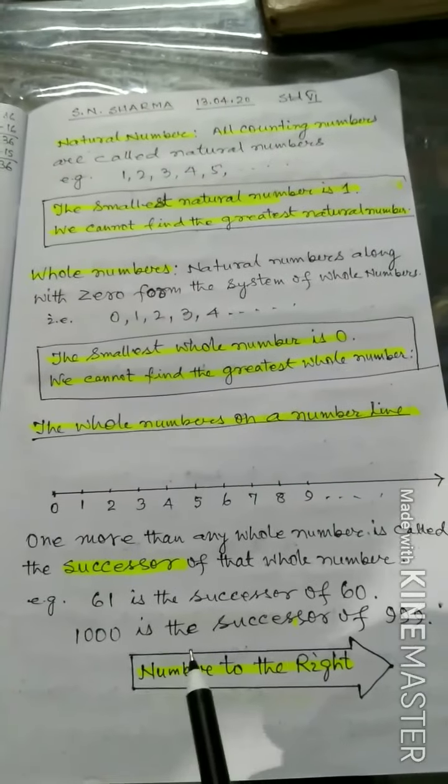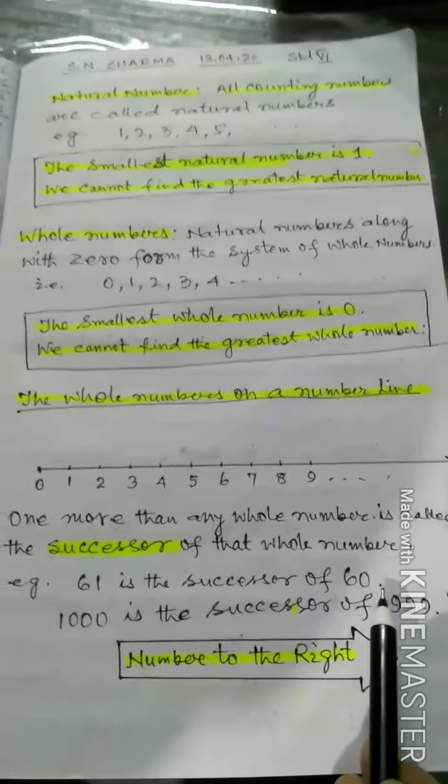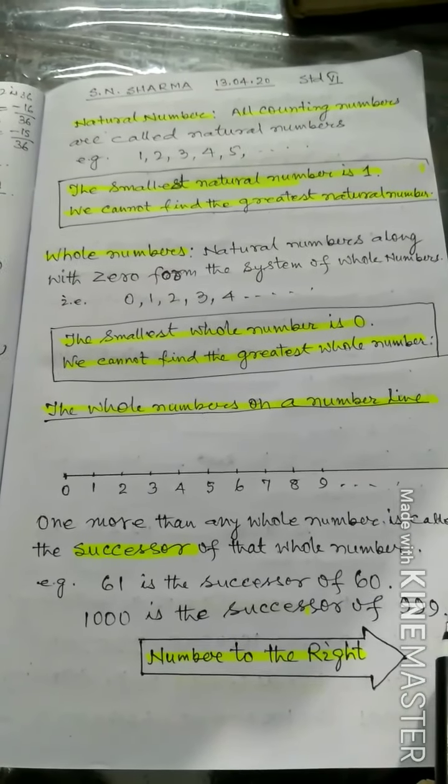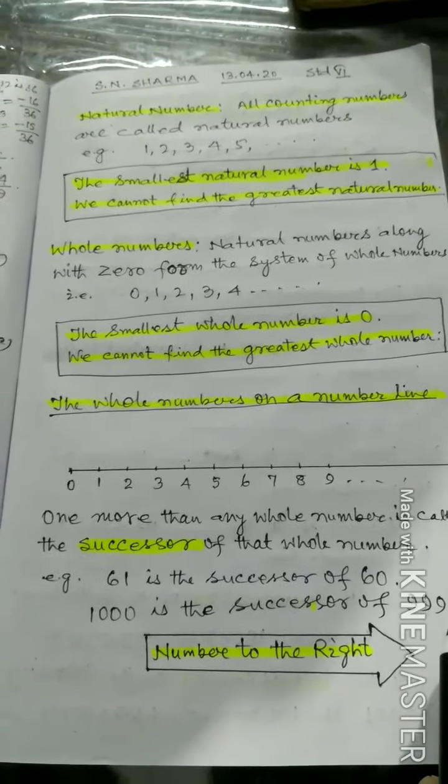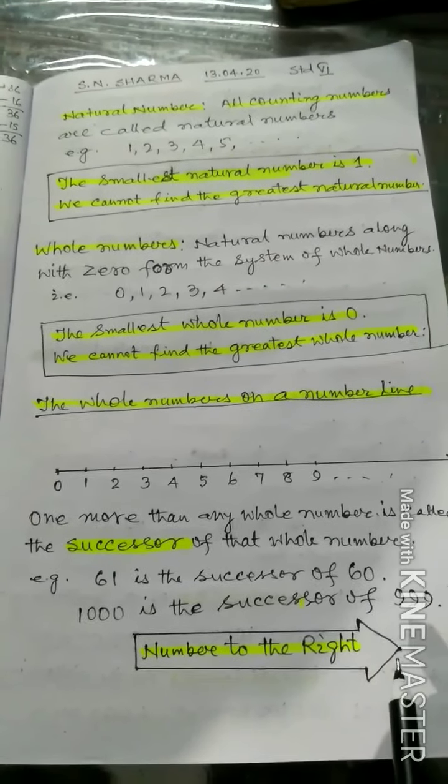For example, 61 is the successor of 60. 1000 is the successor of 999. In the successor, number to the right. Remember.